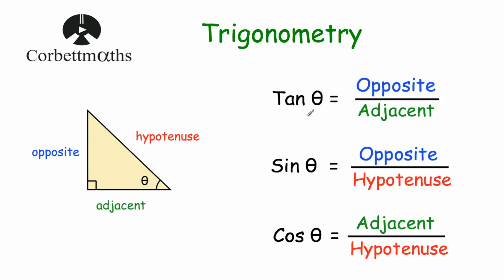The trig ratios are: tan of beta is equal to the opposite divided by the adjacent; sin of beta is equal to the opposite divided by the hypotenuse; and cos of beta is equal to the adjacent divided by the hypotenuse. Now let's have a look at how we can use these to find the lengths of missing sides of right-angle triangles.